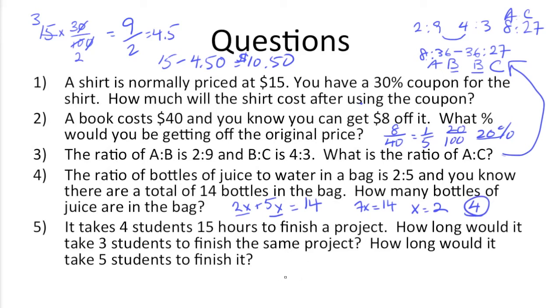All right, and last up, we have a question that has 4 students taking 15 hours to finish a project. We're trying to figure out how long it would take 3 students to finish that project, and how long it would take 5 students to finish it. So if we think about it, if it takes 4 students 15 hours to finish a project, 3 students would probably take longer to finish the same project, while 5 students would take fewer hours to finish that same project. So this would be an inverse variation problem.